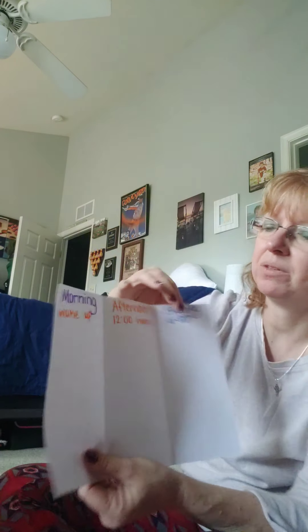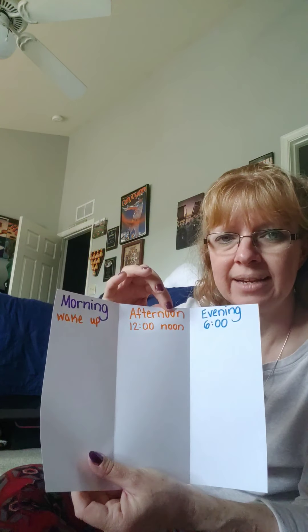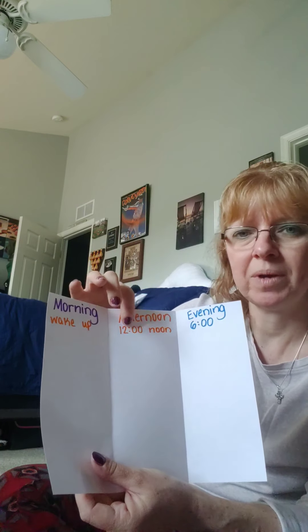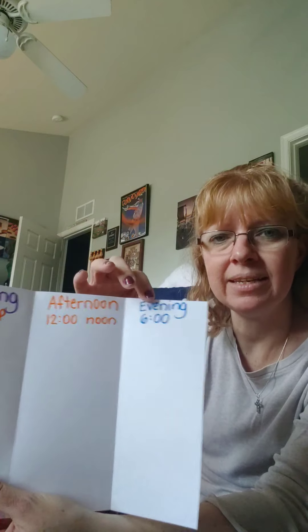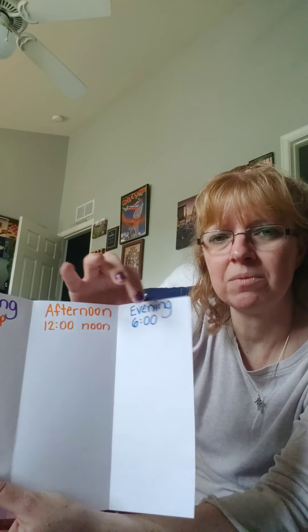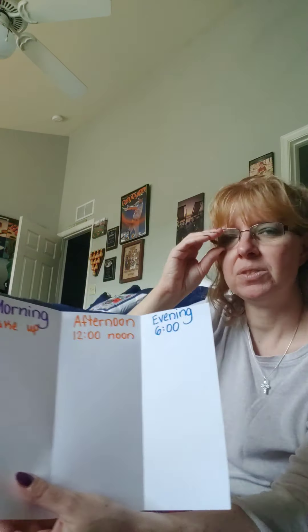Mom or dad can help you if you need. Open it back up and you have three columns. My first one says morning — when I wake up. Afternoon comes next, and I wrote 12 o'clock noon. And then the evening comes last, and I wrote 6 o'clock. So tomorrow — there's another time word: tomorrow — whatever day after that you watch this lesson, get up in the morning when you wake up and do your piece of paper.